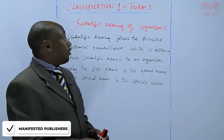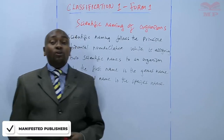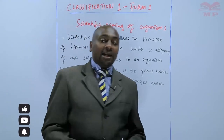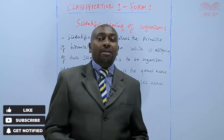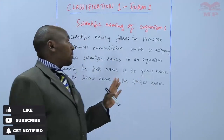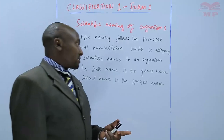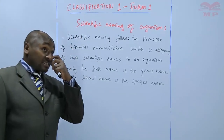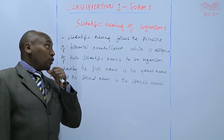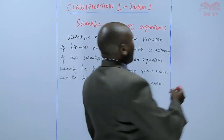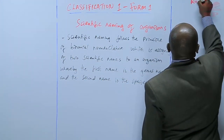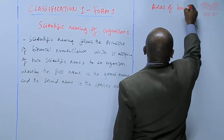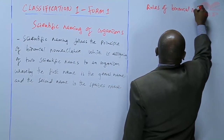The naming of organisms follows the concept we call binomial nomenclature. The word nomenclature means naming, and binomial means using two names. When coming up with scientific names, there are some rules that we follow. These are the rules of binomial nomenclature.